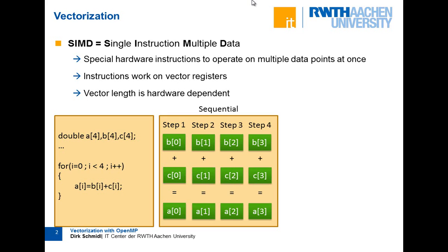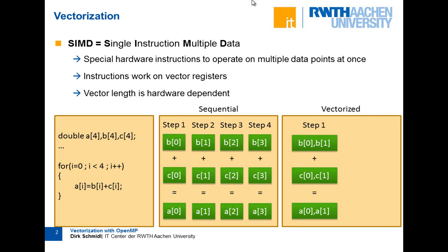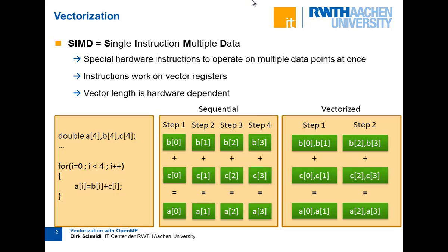If you do vectorization — which needs special hardware support — in step one you load a vector of elements. In this case it's a vector of length 2, two double elements 0 and 1. You load two elements of vectors B and C and store them all together in array A. So basically in one step you compute double the amount of data. You need special registers with double the length and special instructions for the addition and data movement. Instead of four steps, you only need two steps — a speedup of a factor of two.